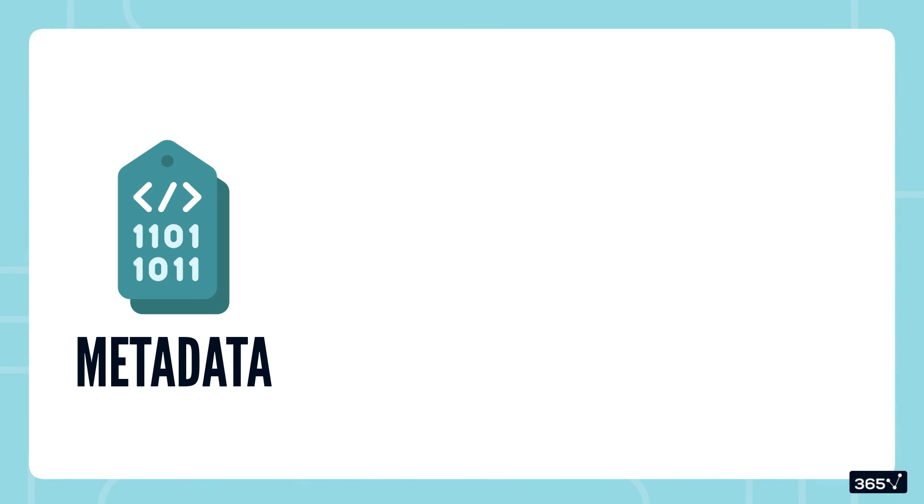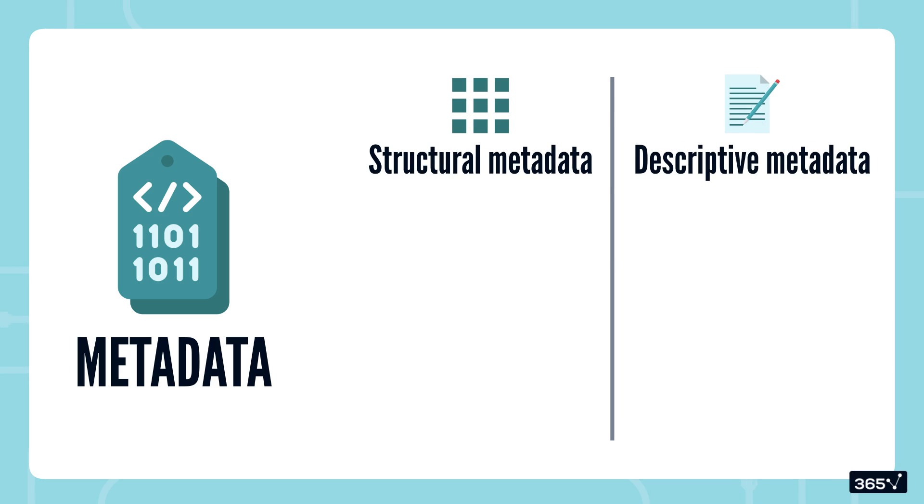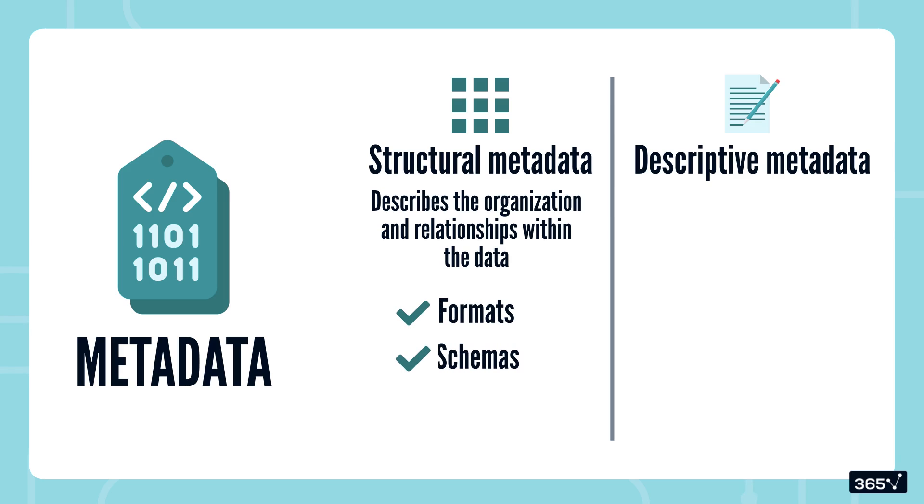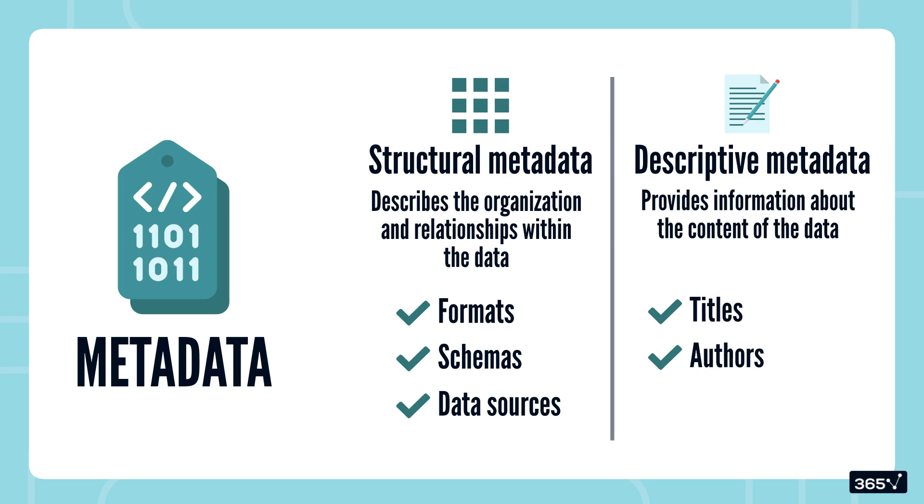Some examples of commonly used metadata are structural and descriptive metadata. Structural metadata describes the organization and relationships within the data, like file formats, schemas, and data sources. Descriptive metadata provides information about the content of the data, like titles, authors, or subjects for books.